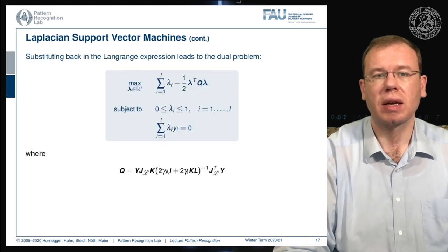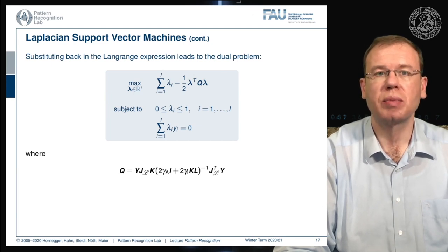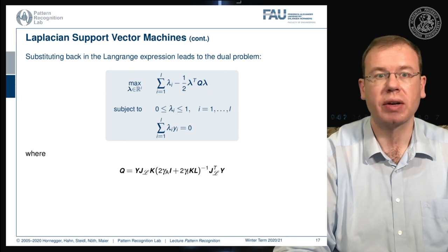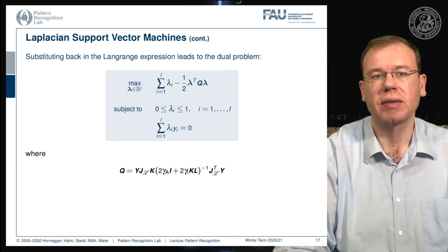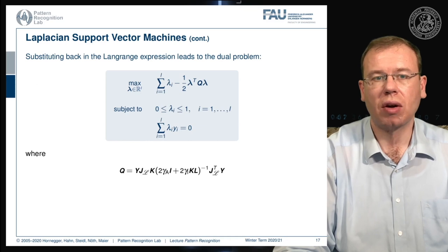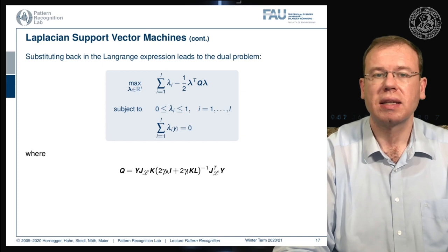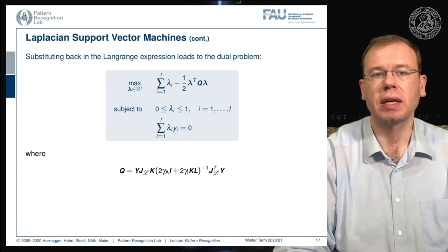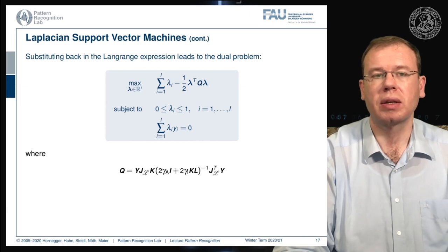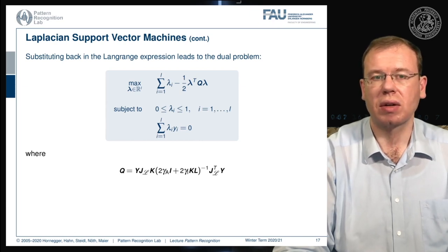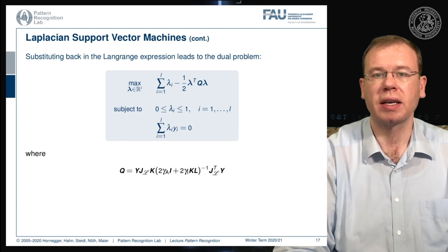This brings us to the Lagrange dual problem. Here we are no longer in the domain of primal variables but only the duals — the Lagrange variables. This can be written in compact form by introducing a new matrix Q, which is essentially the long chain of matrices observed earlier. The constraints remain: lambda_i must be between 0 and 1, and the sum over the labeled data set of lambda_i times y_i equals zero.